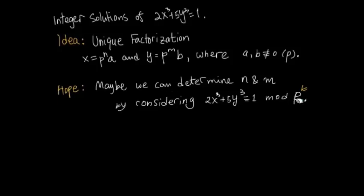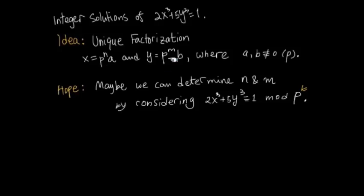Once you have that boundary — say you're guaranteed you only need to look at primes up to 13 — you can apply the modular method mod p^k for each of those primes, figure out all the n and m values, and then by unique factorization the only possibilities for solutions are obtained by assembling those prime powers with plus or minus signs. If none of those candidates work, you conclude the equation has no solutions.